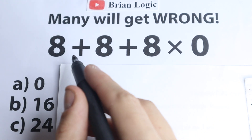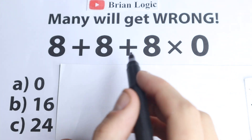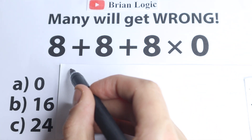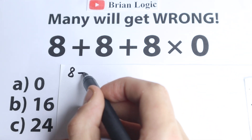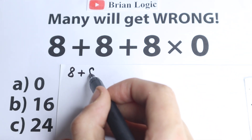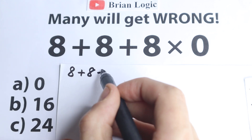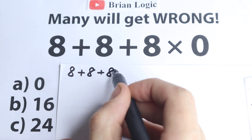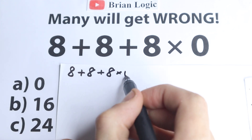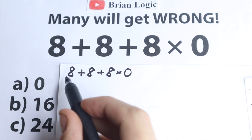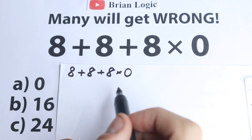So first of all, I want to start with this solution. Take a look closely — we have the question. I wanted to rewrite it: we have 8 plus 8 plus 8, and times 0.